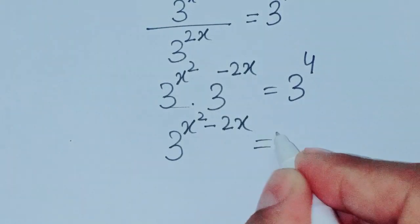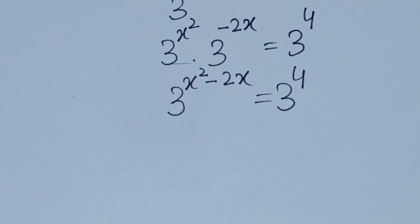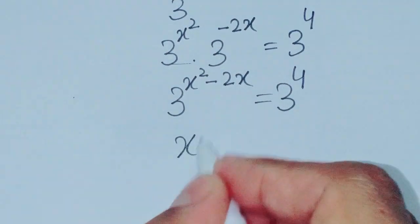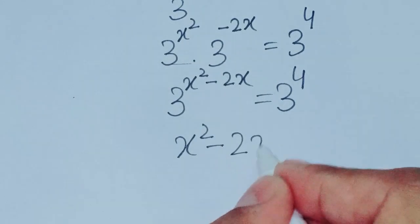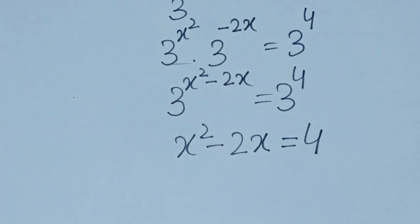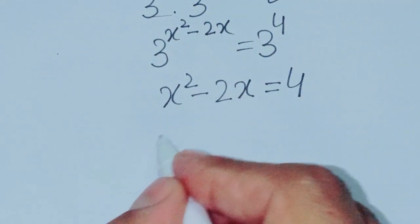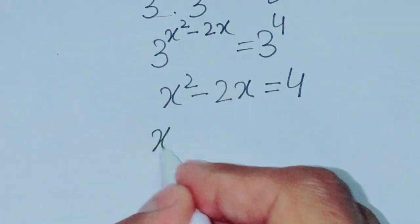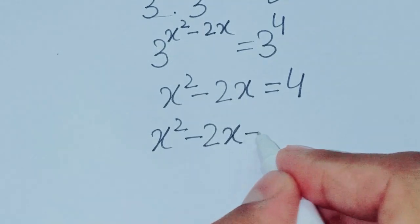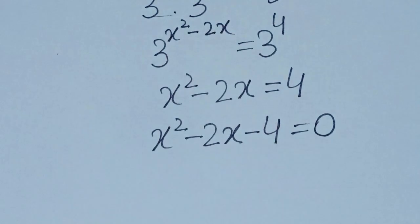Since the bases are the same, we can add the powers: 3 power (x squared minus 2x) is equal to 3 power 4. Since the bases are the same, the powers must also be equal, so x squared minus 2x equals 4. Shifting 4 to the left side gives us x squared minus 2x minus 4 is equal to 0.